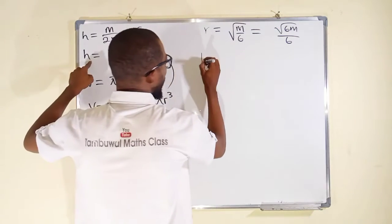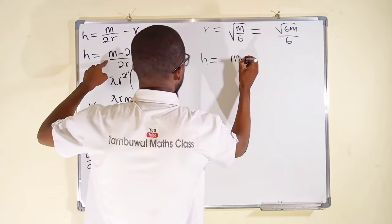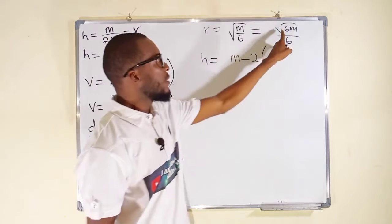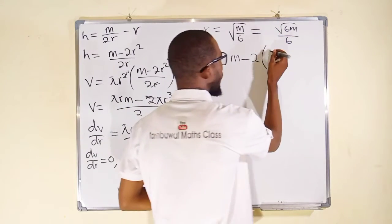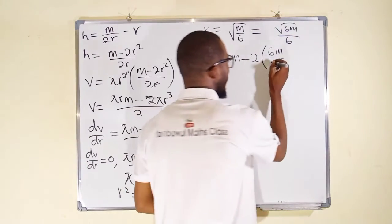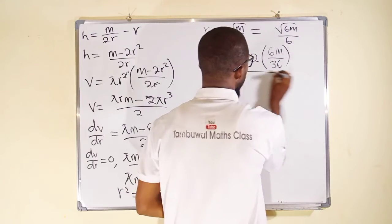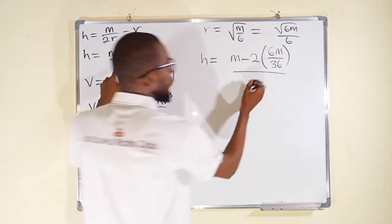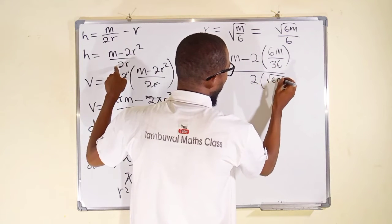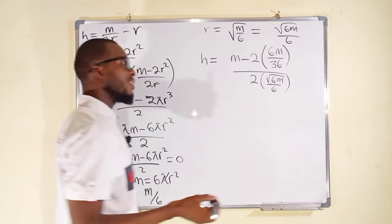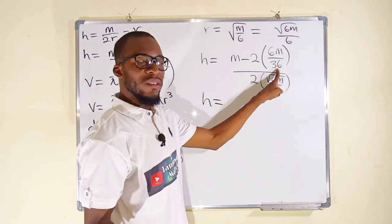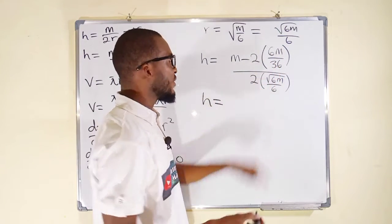Substituting back, h equals (M minus 2 times r squared) over 2r. Squaring r: the square cancels the square root on top giving 6M, divided by 36 on the bottom (6 squared). For the denominator 2r, we have 2 multiplied by root(6M) over 6. Simplifying: 6 goes into 36 six times, and 2 goes into that 6 three times, so the numerator becomes M minus M over 3.